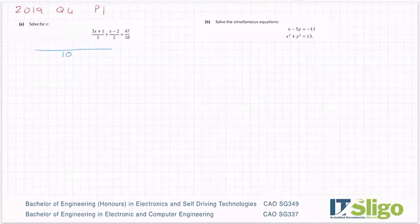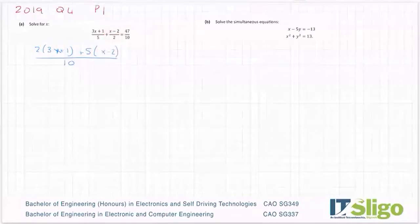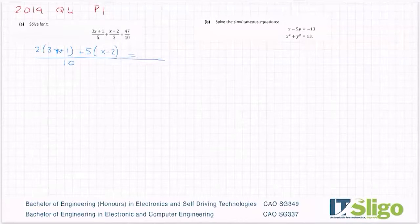So a couple of ways of doing it. I would look at it as 5 into 10 goes twice, so it's 2 times (3x + 1) plus 2 into 10, 2 into 10 goes 5 times, so it's 5 by whatever's on top of the 2 equals 10 into 10 goes once, so it's 1 times 47.